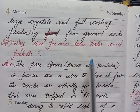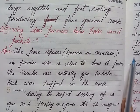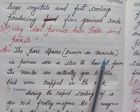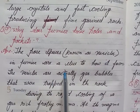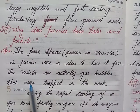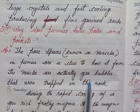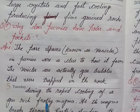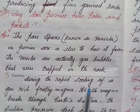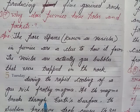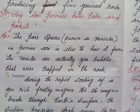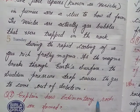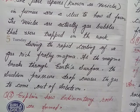Question seven: why does pumice have holes and pockets? Answer: the pores known as vesicles in pumice are a clue to how it forms. The vesicles are actually gas bubbles that were trapped in the rock during the rapid cooling. As the magma breaks through the earth's surface, the sudden pressure drop causes the gas to come out of solution.